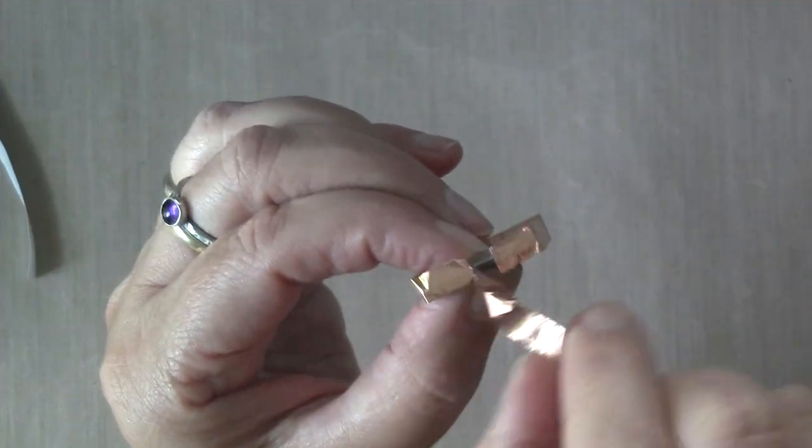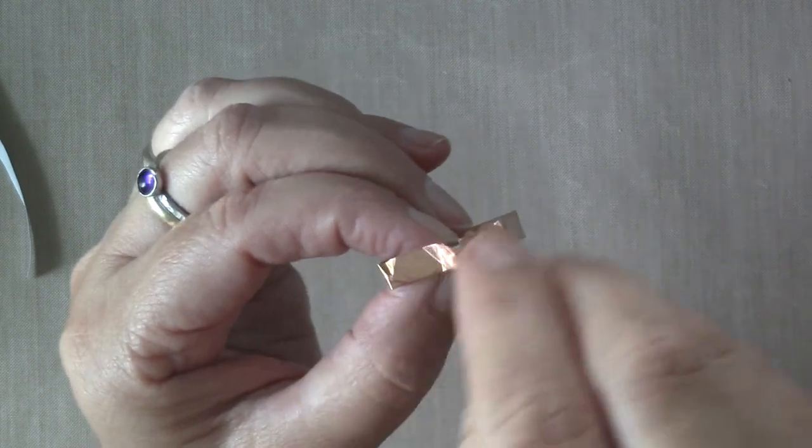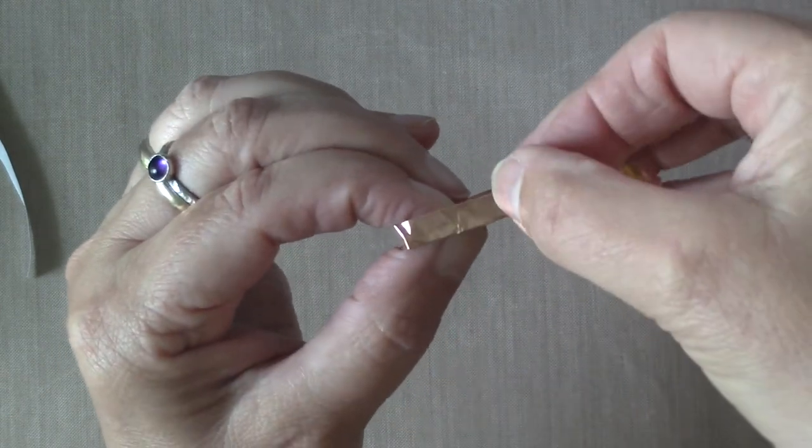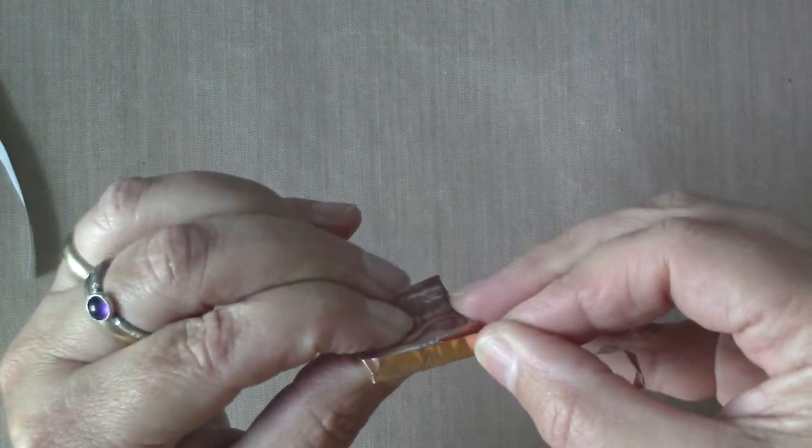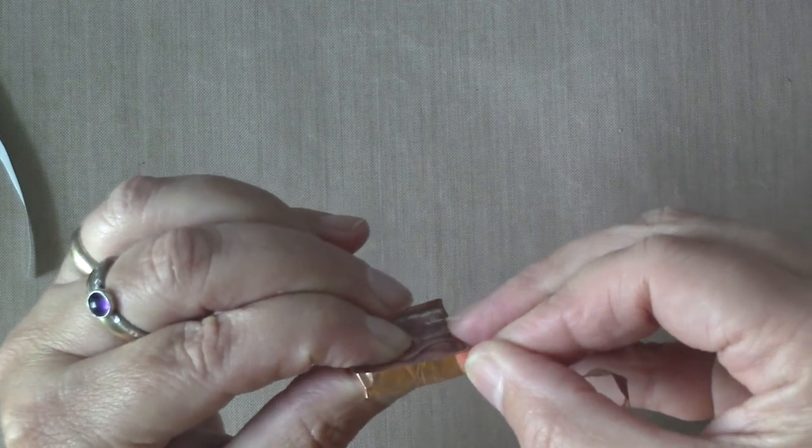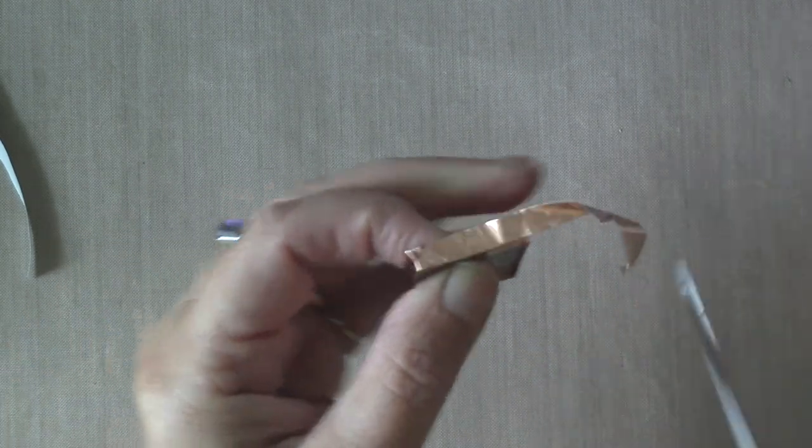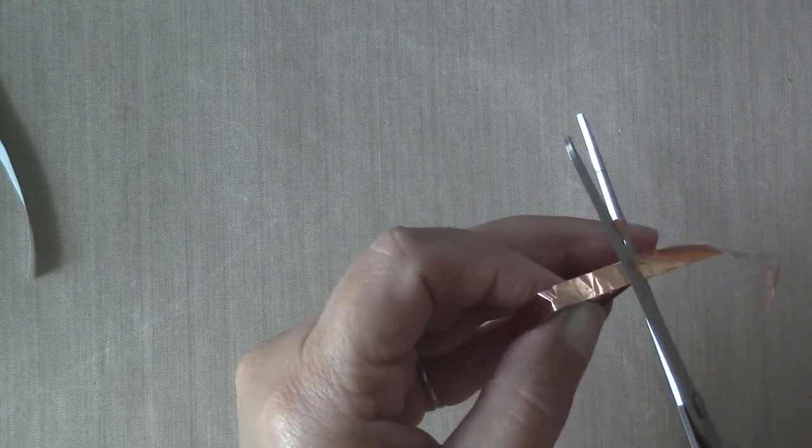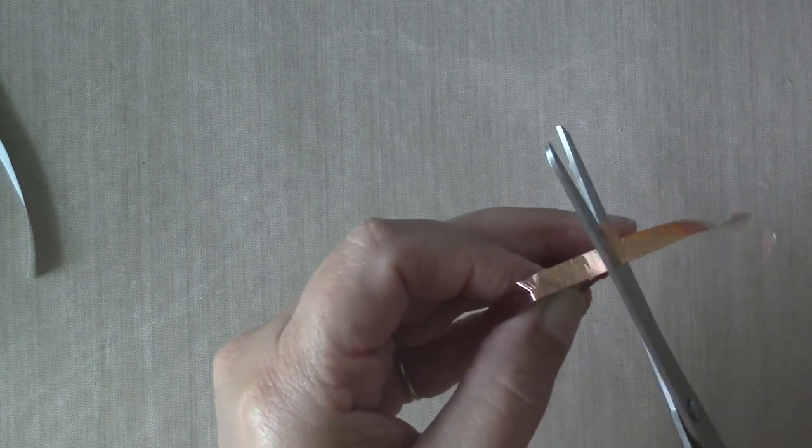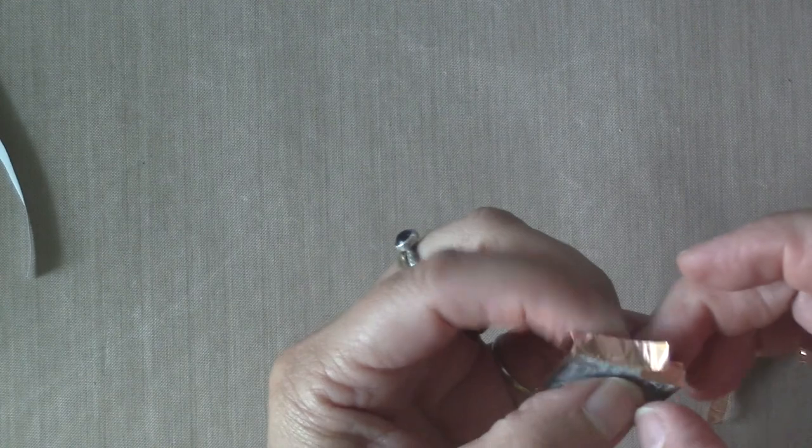You just want to wrap it all the way around. This is where I'm going to meet and I'm going to overlap this just a little bit. You want to make sure that it is straight and then trim it off. You don't want the copper foil to be on the corner.